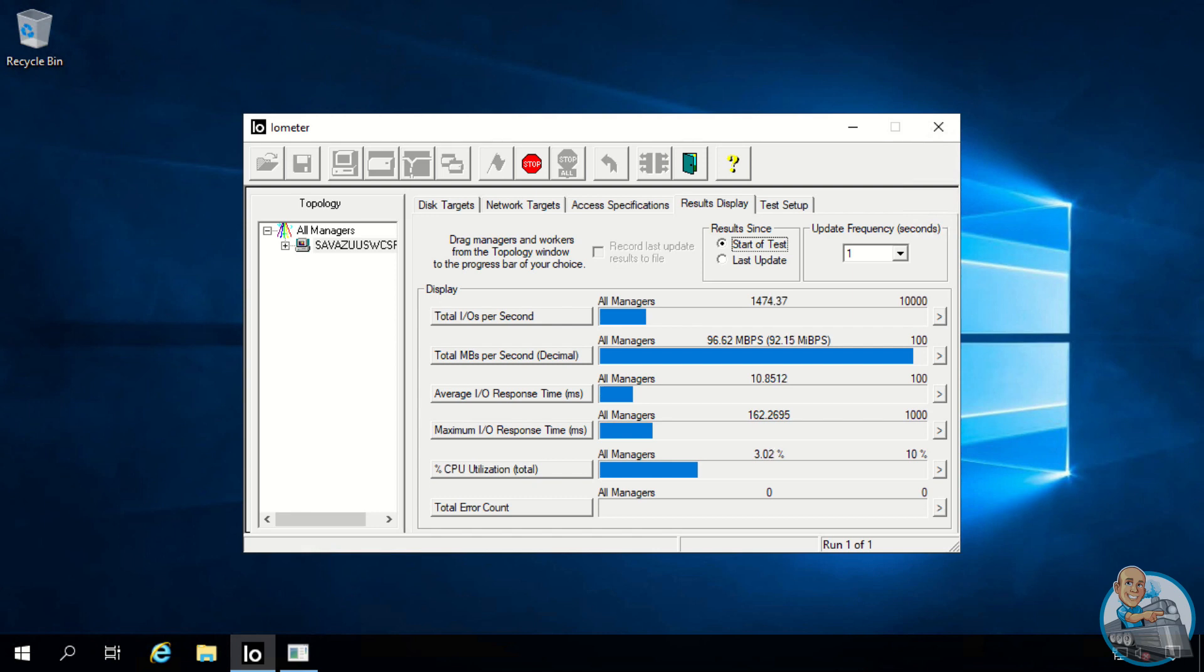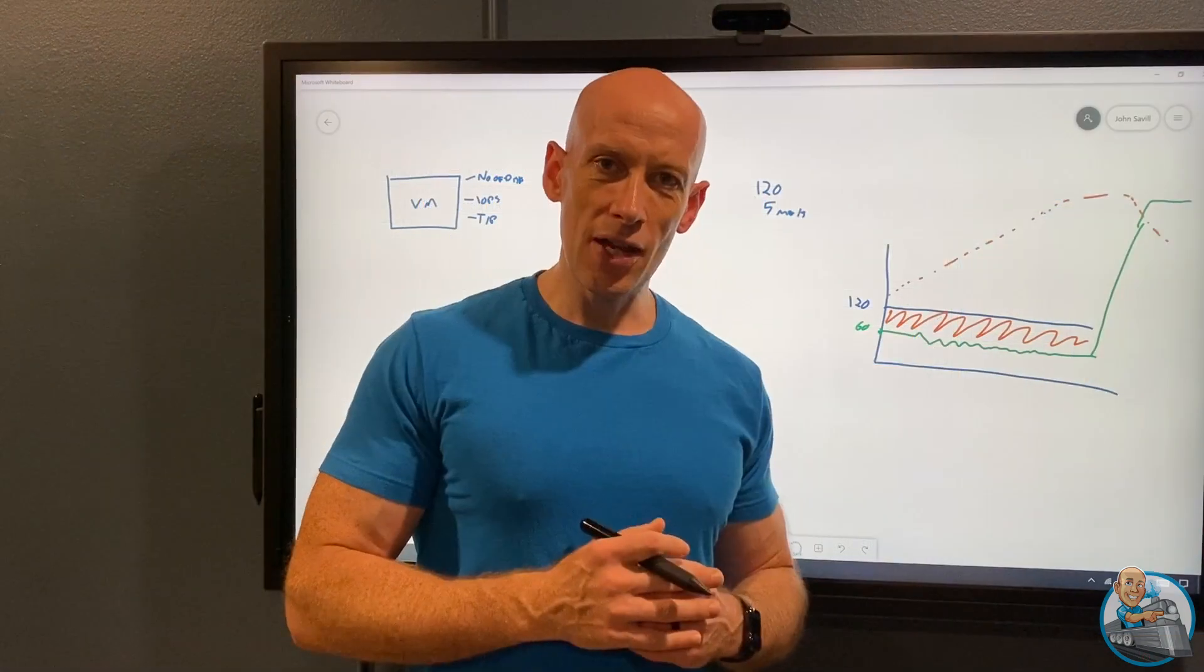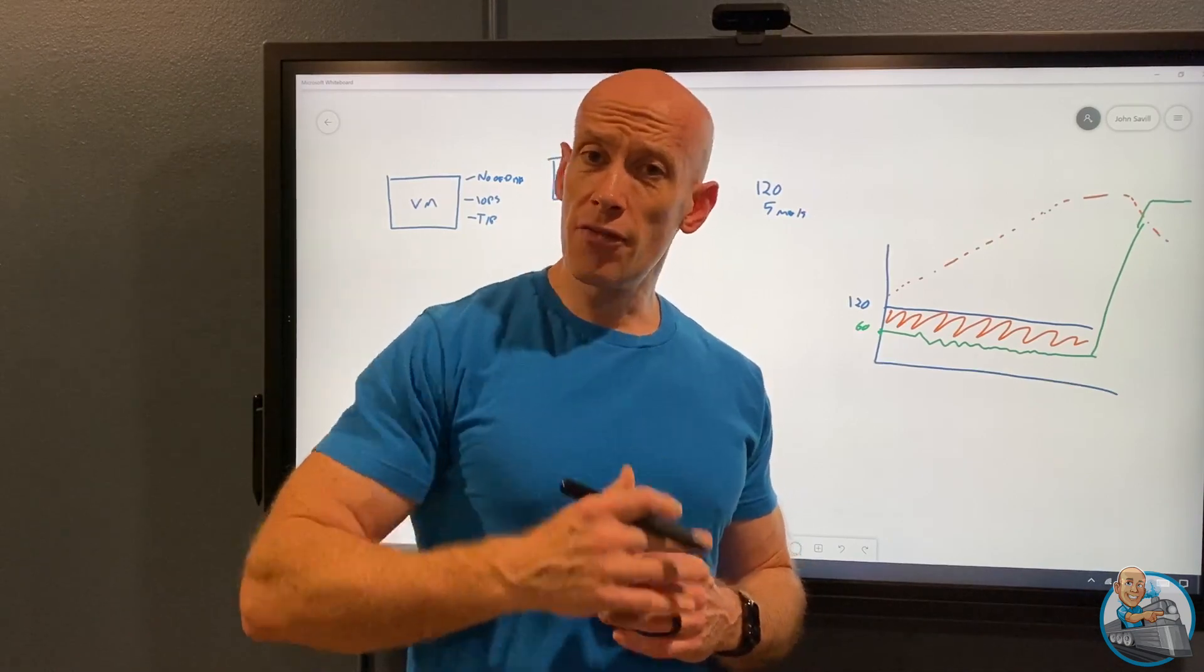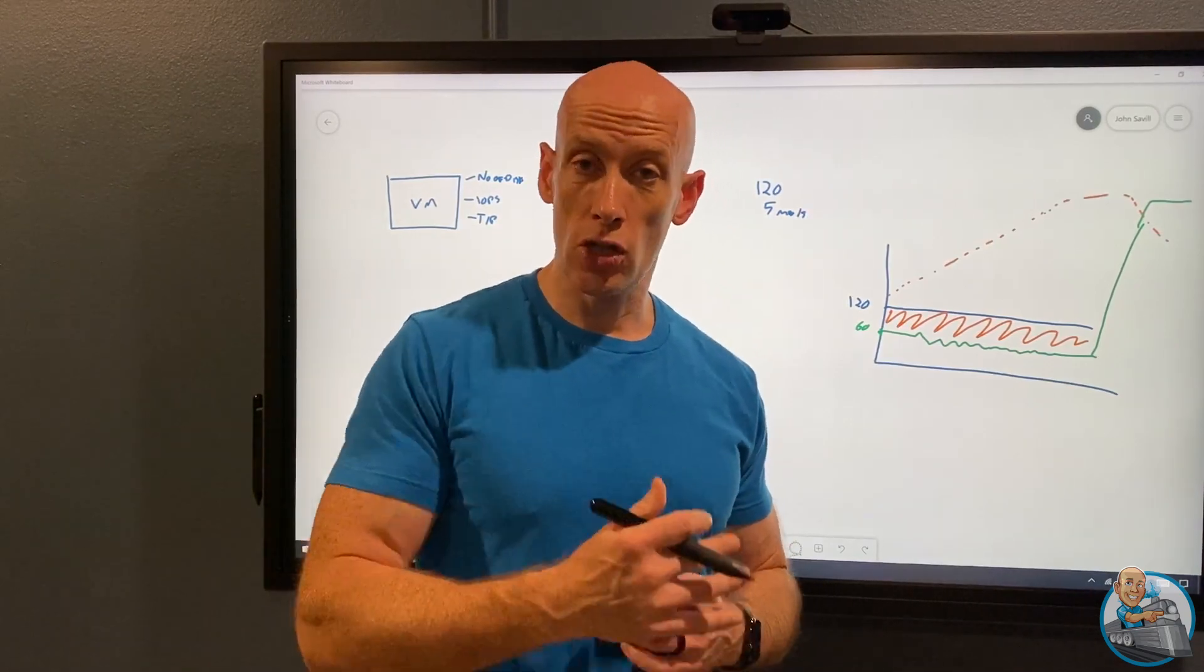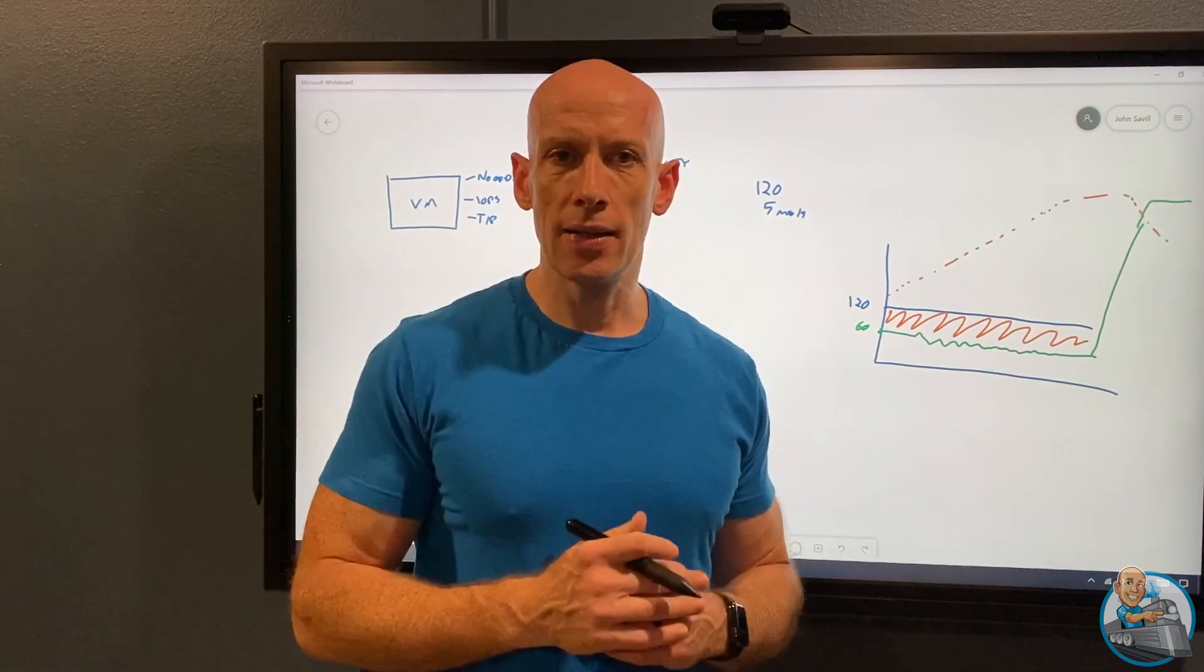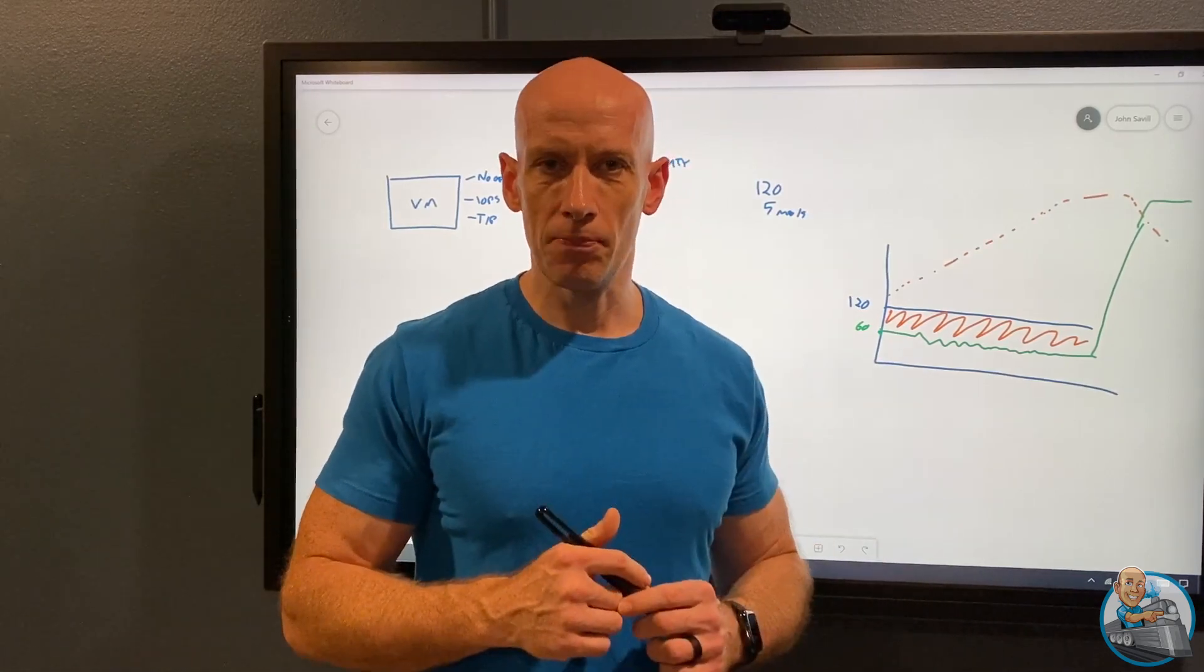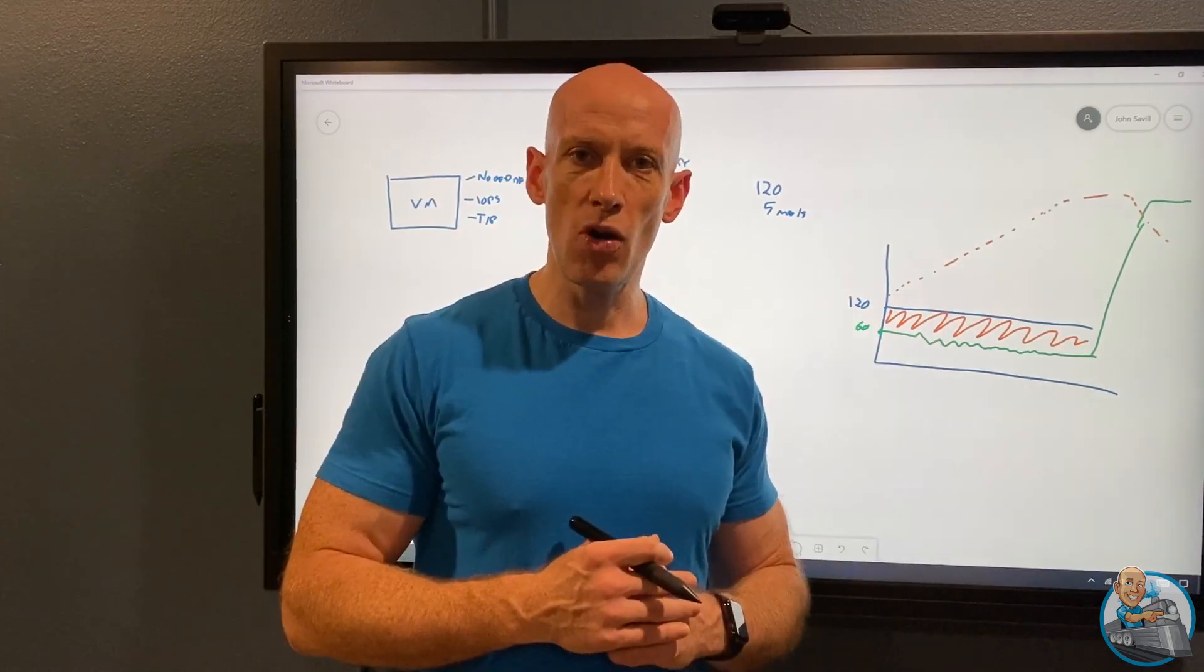But that's really it. That's kind of walking through and showcasing, hey, I can burst the IOPS, I can burst the throughput with this new bursting capability. So I hope you found that useful. Go and give this stuff a try. At time of recording, it's really only West Central US that you can use this in. But this will expand as it hits kind of general availability. Thank you for watching. Please give me a like and subscribe.